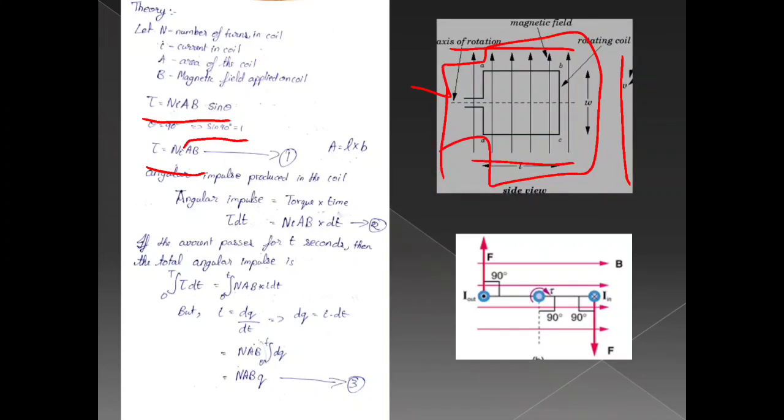The angular impulse is produced in the coil. Angular impulse is equal to torque and time. Torque into the time. Torque T T is equal to N A B into D T. If the current passes through the 90 second, then the total angular impulse is integration of torque D T.